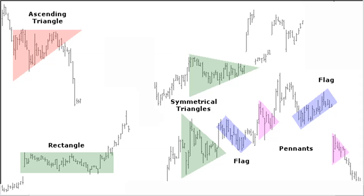Triangle formations appear as symmetrical triangles, ascending triangles, and descending triangles. Short period continuation patterns are pennants and flags.